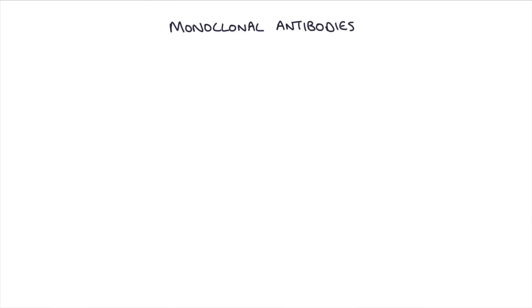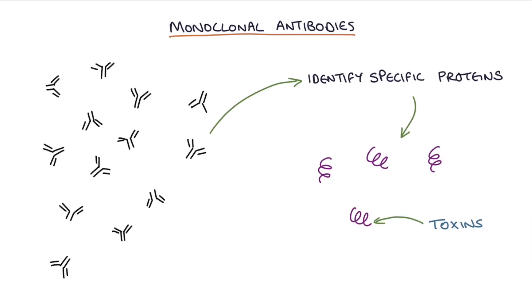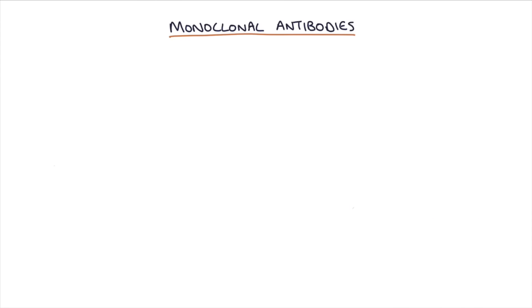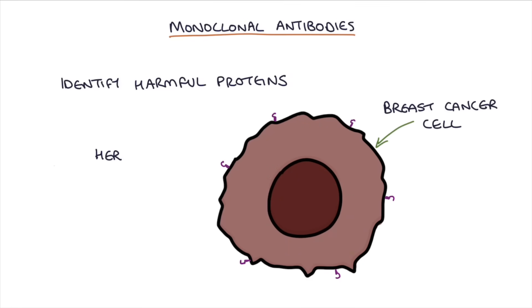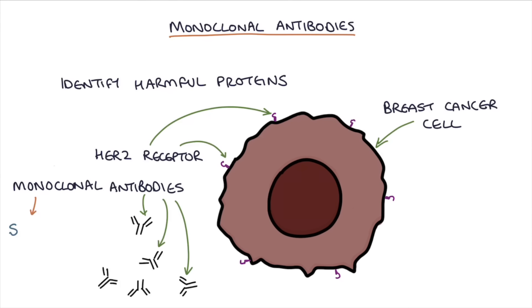So finally, let's get on to monoclonal antibodies. We know that antibodies are part of the immune system and provide a really effective way of fighting off pathogens. They're very good at selectively identifying specific proteins that are part of a harmful process, such as toxins, parts of bacteria, or parts of cancer cells, and set the immune system to work destroying whatever is associated with that antigen. Monoclonal antibodies, which basically means single clones, are a single type of antibody that target a specific protein.